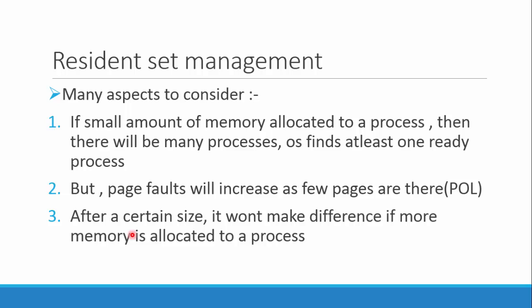If we assign a small amount of memory to a process, there can be many processes in the main memory, so we can find at least one ready process. But since the memory assigned is small, there will be many page faults, because according to the principle of locality the references are nearby but we are not able to load those nearby pages. Also, after a certain size it won't make a difference if more memory is allocated, so there should be a balance.